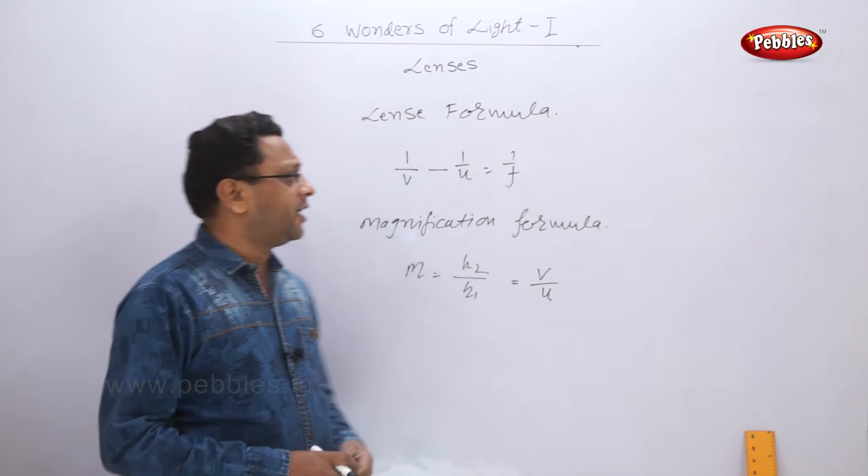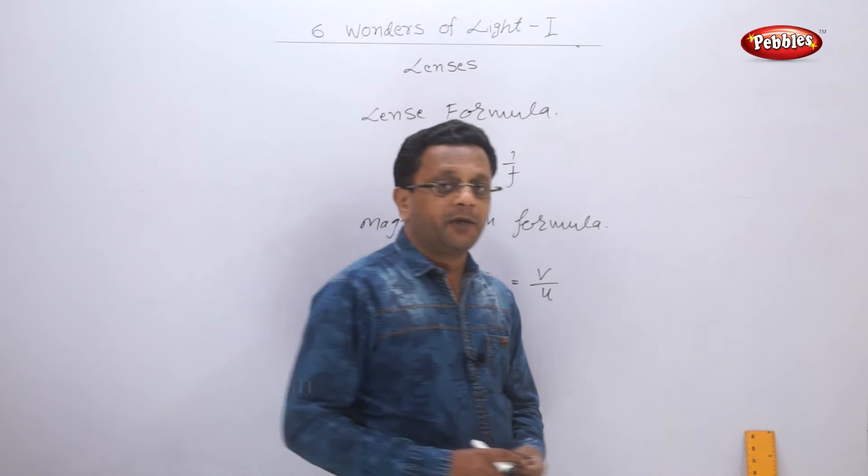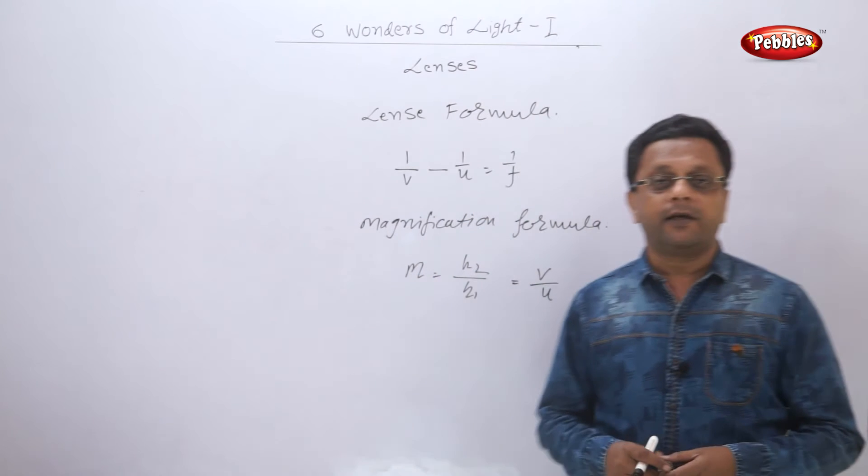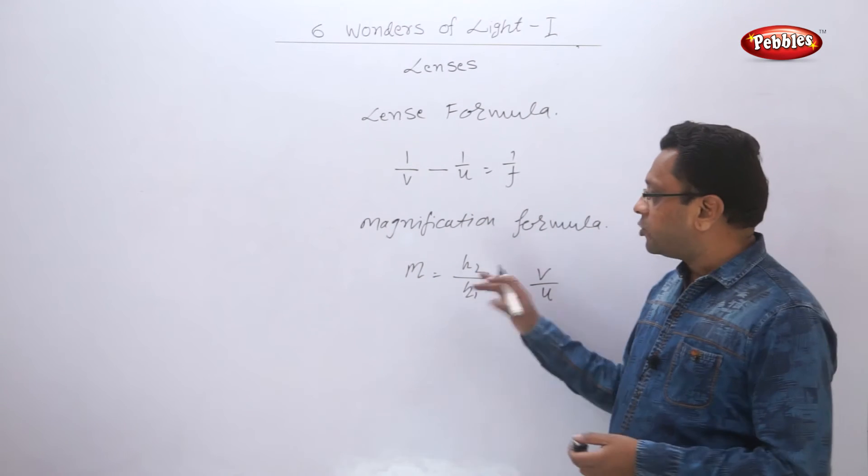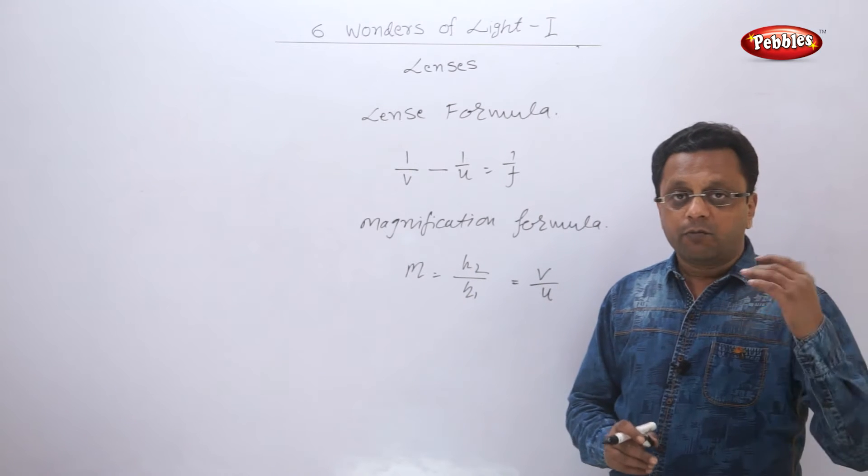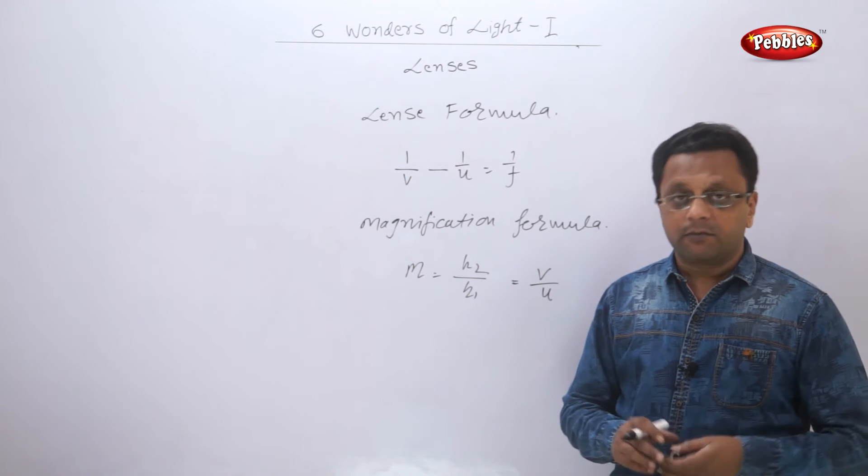You can easily understand that because in case of mirrors the rays were reflected, and here the rays are refracted. That is the difference. Based on this, we have one more formula or one more term in case of lenses.